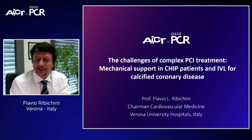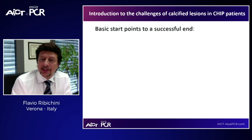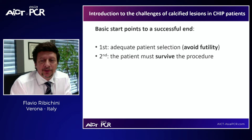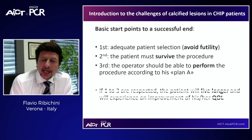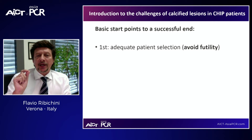Thank you, Ashok. Hello everybody, it's a pleasure to be with you here today. I have no conflicts of interest. I will start from three basic points to drive you to a successful end when dealing with challenges with calcified lesions in CHIP patients. First: adequate patient selection to avoid futility. Second: the patient must survive the procedure. Third: the operator should be able to perform the procedure according to his plan A. If points one to three are respected, the patient will live longer and experience an improvement in quality of life.